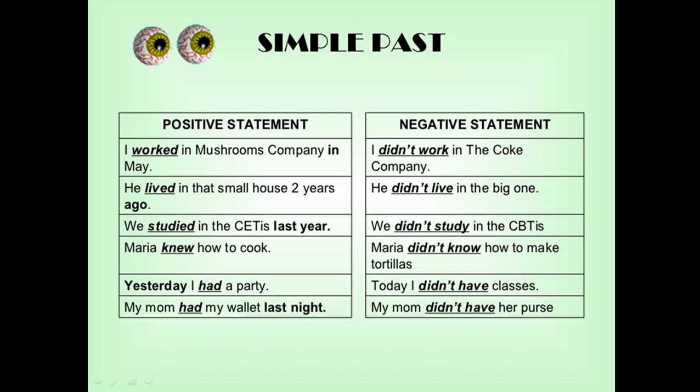Kitabınızın arka sayfasında irregular verbs listeleri var. You can find the irregular verb list in your Eyes Open Student's Book, page 126. Irregular verbs in past simple hallerine buradan bakabilirsiniz.